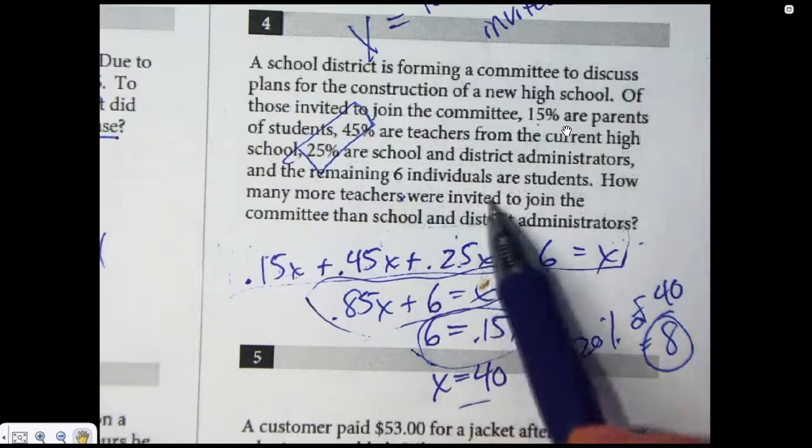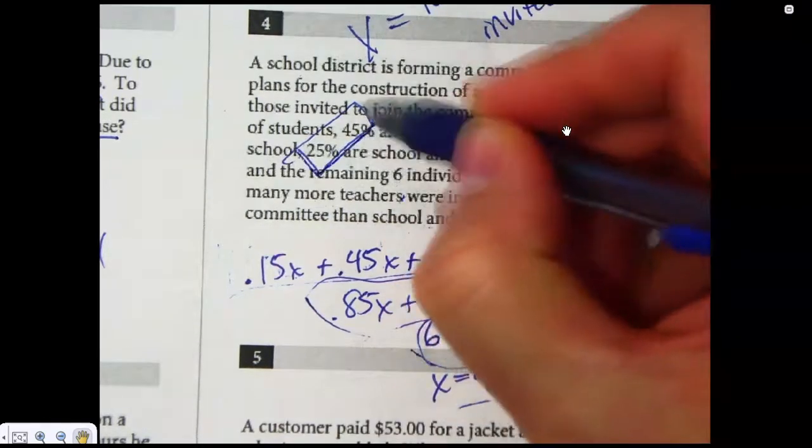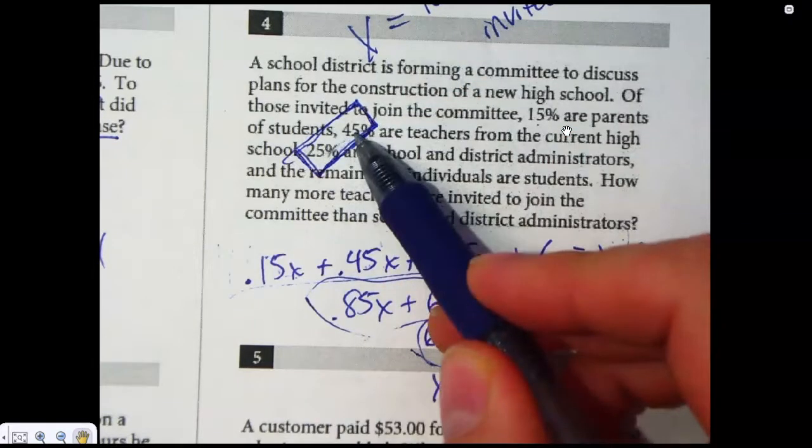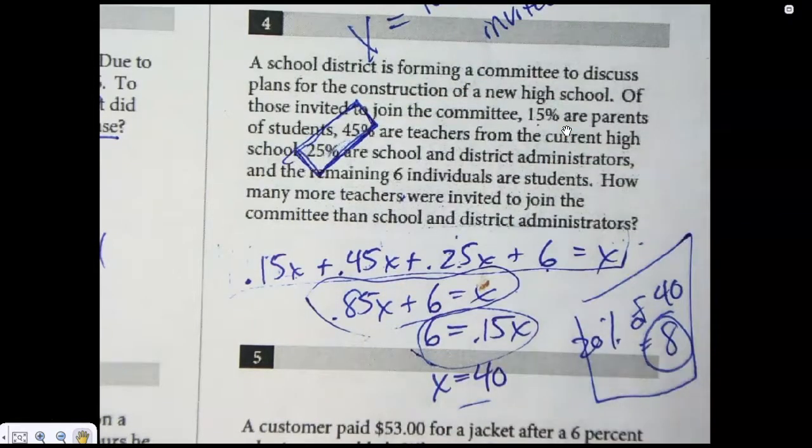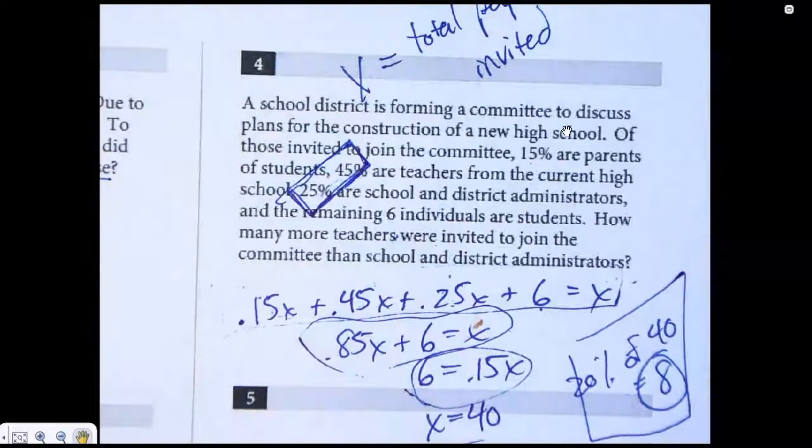But then it's how many more teachers were invited to join the school and district administration. So then I got to take an extra step. Well, there were 20% more teachers invited. So I did 20% of 40, and that got me eight. So there's two or three spots you can kind of get left behind there.